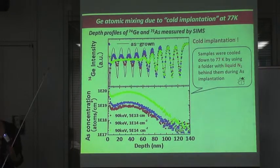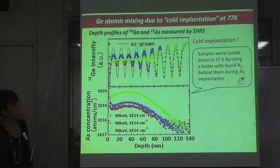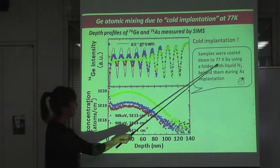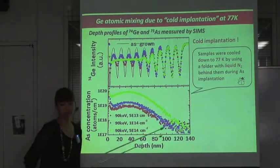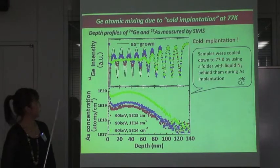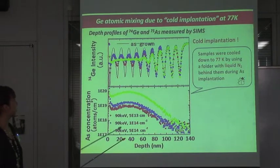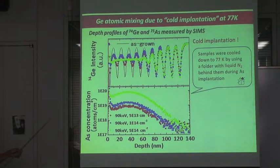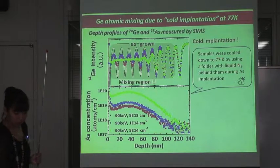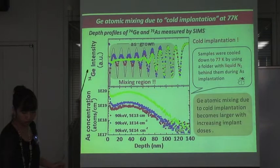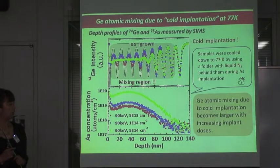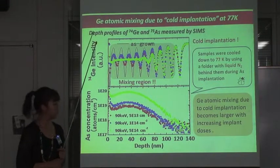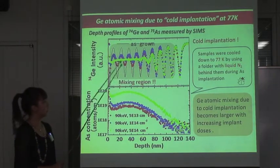I will show you the results of the analysis using cold implantation. Cold implantation means the samples were cooled down to 77 Kelvin using a holder with liquid nitrogen behind the sample during arsenic implantation. This figure shows the depth profiles of 74Ge and 75As measured by SIMS. We again obtained that Germanium atomic mixing due to implantation becomes larger with increasing implant doses.